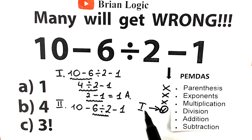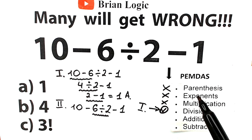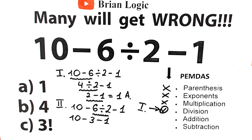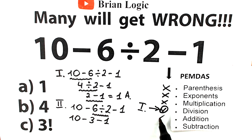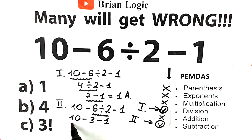Division is our first step. We have 10 minus 6 divided by 2 equals 3, minus 1. Now we have basic subtraction — we can skip ahead to the subtraction step: 10 minus 3 minus 1 equals 6. So we have 6.